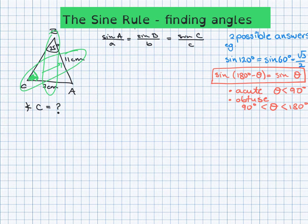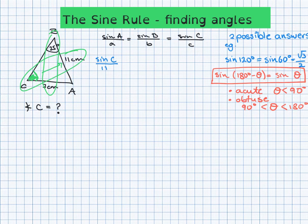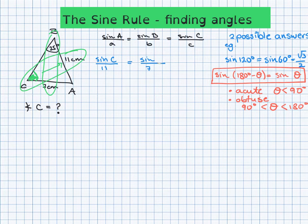Using the sine rule, it is: sine of C over its corresponding side, which is 11, equals sine of B over its corresponding side. Sine of B is 25°, so I'll write that in, and the opposite side is 7 centimetres.